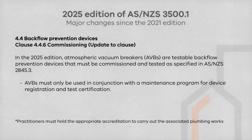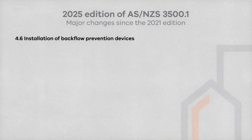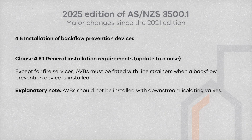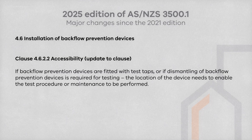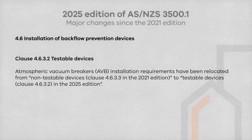AVBs should only be used where there is device registration and certification. Under Clause 4.6.1, other than for fire services, AVBs must have line strainers when a backflow prevention device is fitted, and must not be installed with downstream isolating valves. Backflow devices fitted with test taps need to ensure accessibility — as covered in Clause 4.6.2.2 — for testing purposes or where the setup requires dismantling for maintenance.